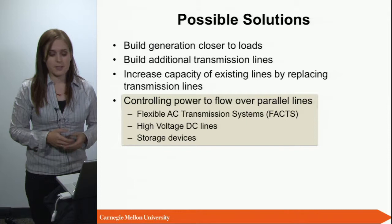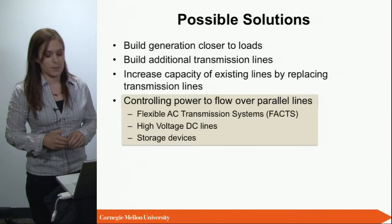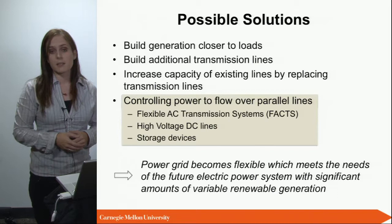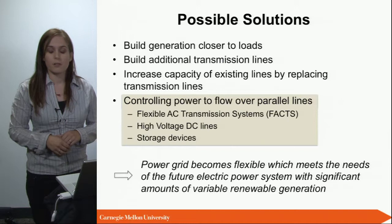Options for doing this include flexible AC transmission systems, high voltage DC lines, and storage devices — I'll talk about each in a moment. What all of these can do is push some power from one line to a parallel system. This makes the power grid more flexible, which exactly meets the needs of a future electric power system with a significant amount of variable renewable generation.